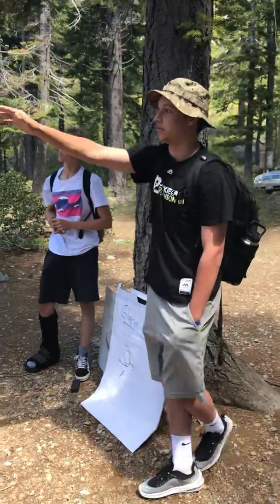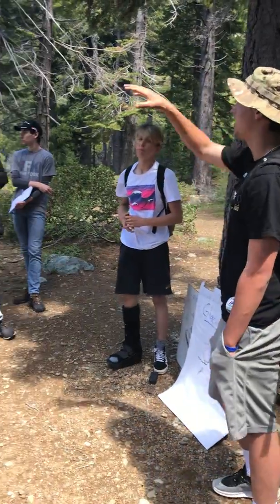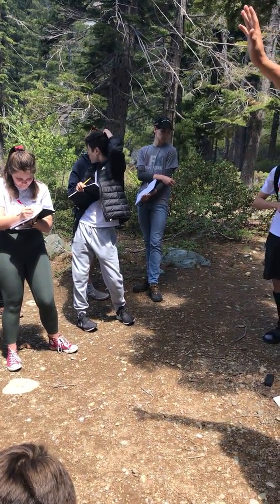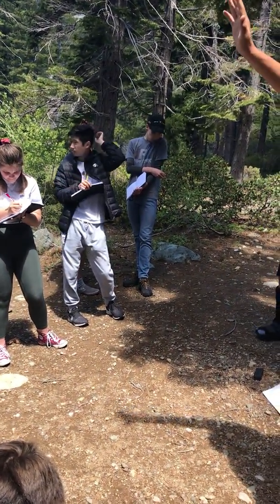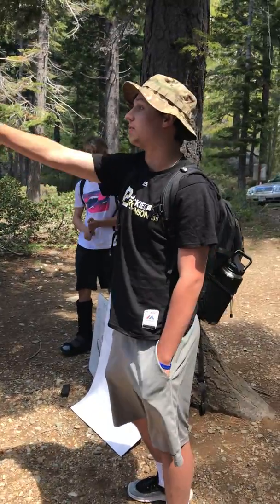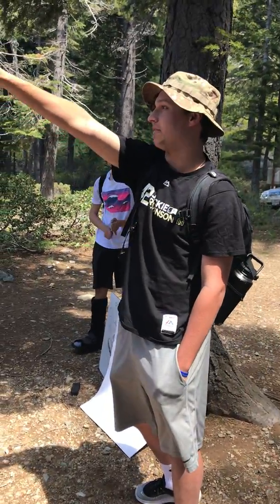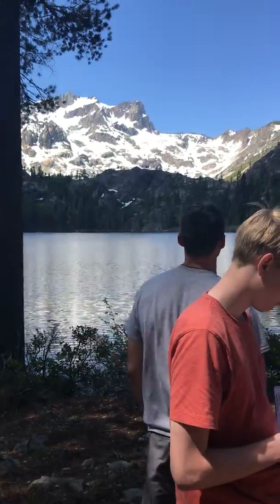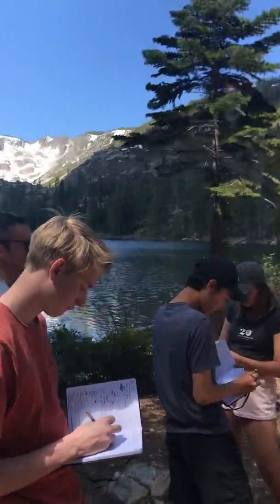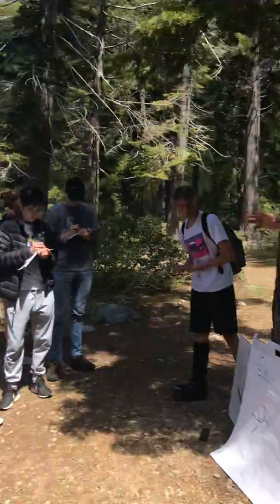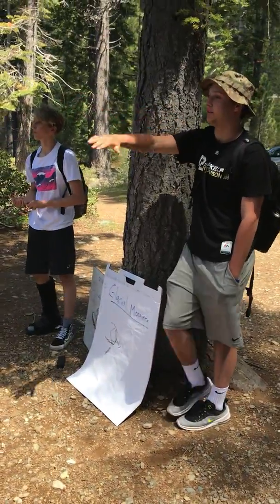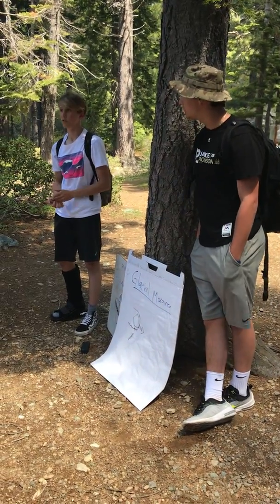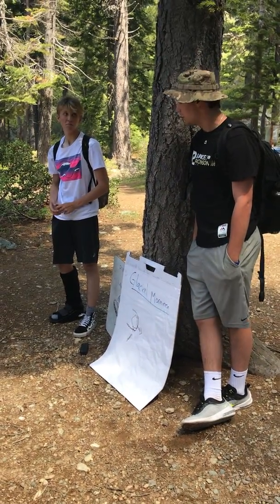That's going to be the second glacier. So it came down first, made this, melted back up, and then more snow came and came down, but not as far, and created that ridge right there, which is another moraine. And then when these glaciers melt, they leave lakes like this here in pockets of land.